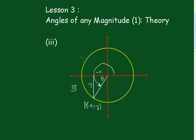Moving on to the third quadrant — you can see the angle Theta in the third quadrant. The angle all the way around is 180 degrees plus Theta. And of course this is minus X and this is minus Y.